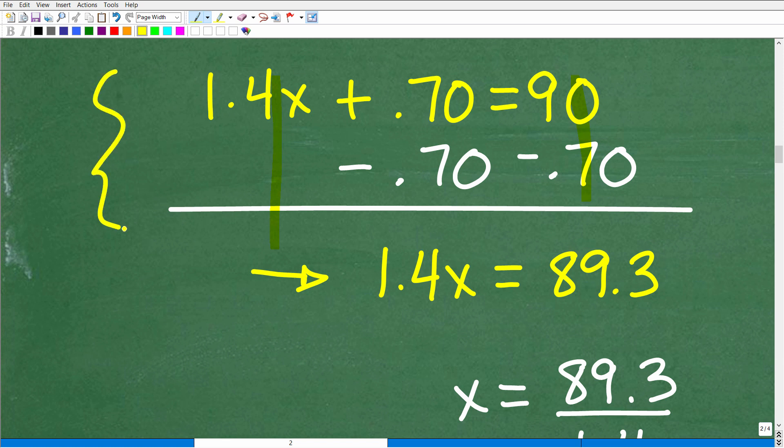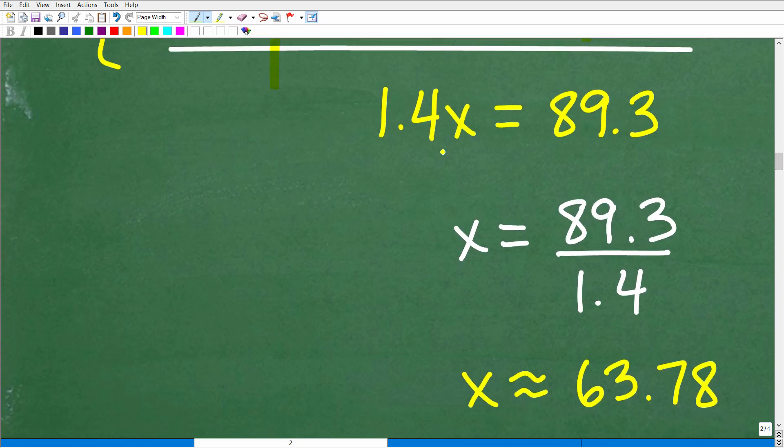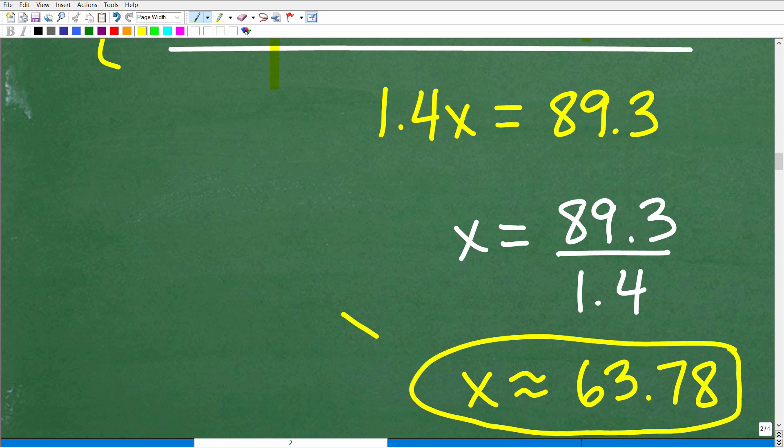I'm going to suggest checking out my pre-algebra course because that's where you're going to learn fractions, decimals, basic equations, percent, all that kind of good stuff. But we're not done yet. So 1.4x is equal to 89.3. So to solve for x, what do we need to do? Well, we need to divide both sides of the equation by 1.4. So x will be equal to 89.3 divided by 1.4. Again, feel free to use your calculator. No need to torture yourself by doing hand arithmetic here. So you're going to get a decimal. It's a pretty long decimal, but we'll go ahead and just approximate it to 63.78.